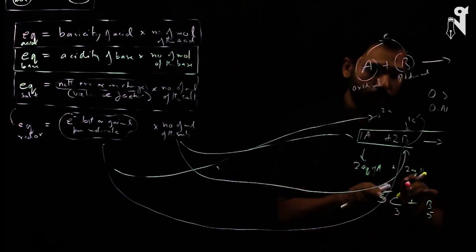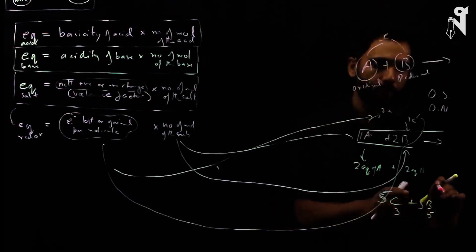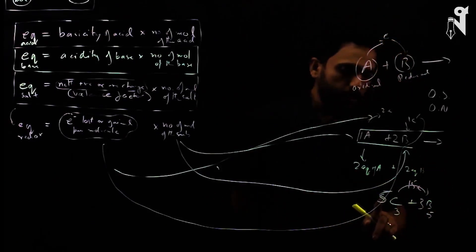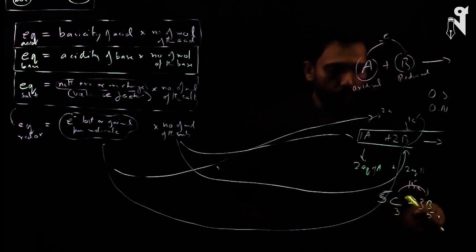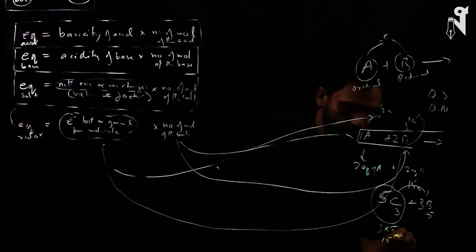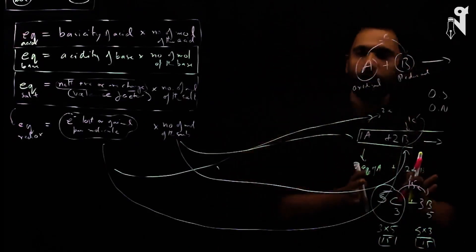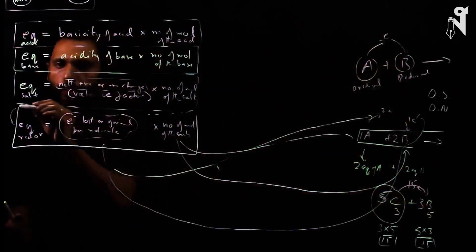We need three D's, each gaining five electrons, totaling 15 electrons gained — matching the 15 lost. So we have 5C reacting with 3D. Equivalence of C: 3 (X factor) × 5 (moles) = 15. Equivalence of D: 5 (X factor) × 3 (moles) = 15. Both give 15 equivalents, confirming one equivalent of C always reacts with one equivalent of D.